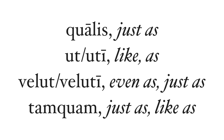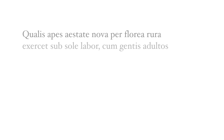Here's a list of words that commonly introduce similes in Latin: 'qualis' (just as), 'ut' or 'uti' (like or as, even as, or just as), and other authors use 'tamquam' (just as or like). Similes in the Aeneid are long and intricate — just look at that bee simile.